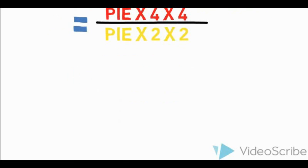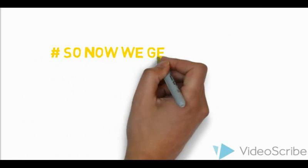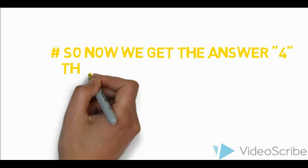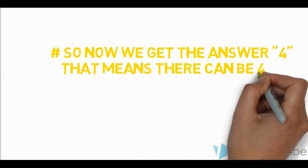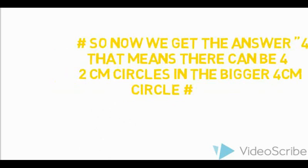Pi and pi cancel out. And you will reach the answer, 16 divided by 4 equals 4. So, it means that there can only be 4 two-centimeter circles that can be put into the bigger one, and no more are there.